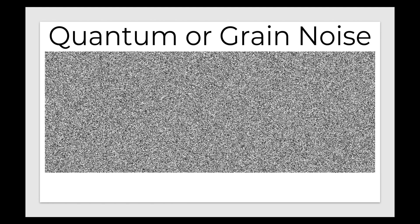There are different types of noise that we can have in an image, and in this video we're going to talk about four different kinds. In this first image, we're looking at quantum noise or grain noise. This is caused by fluctuations in the number of photons that interact with the detector from one point to another. If we expose the detector to a uniform radiation beam — say in an x-ray unit or a CT scanner — we would actually end up getting a grainy image instead of a completely uniform image. That grainy image is what we call quantum noise, and that's the source of most of the noise we see in medical imaging.